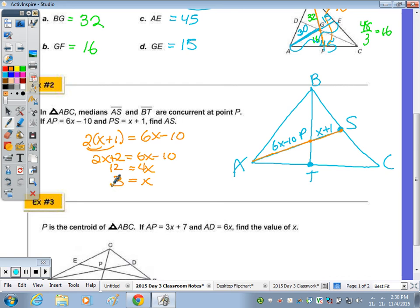Plug it back in to find the length AS. So 3 plus 1 is 4, 6 times 3 is 18, 18 minus 10 is 8. So the whole length AS would be 8 plus 4, which is 12.